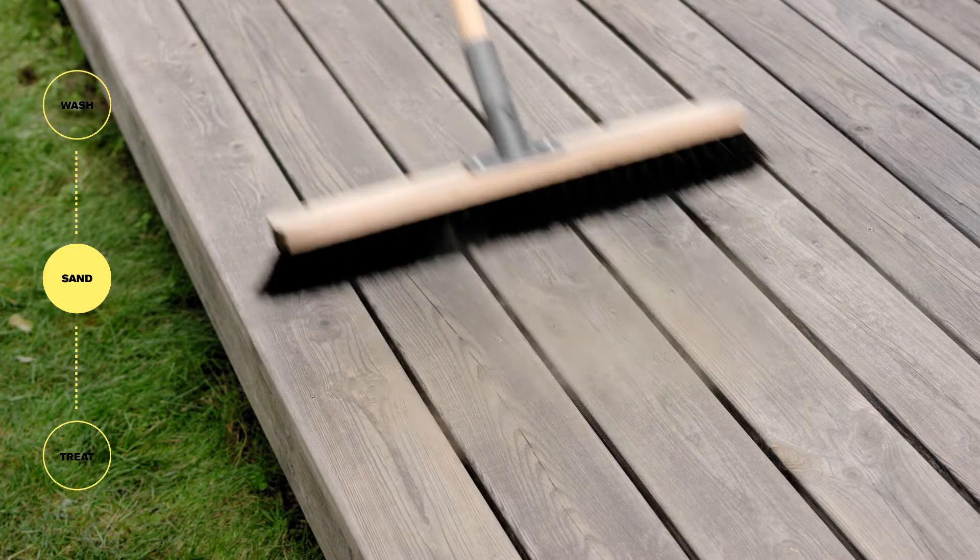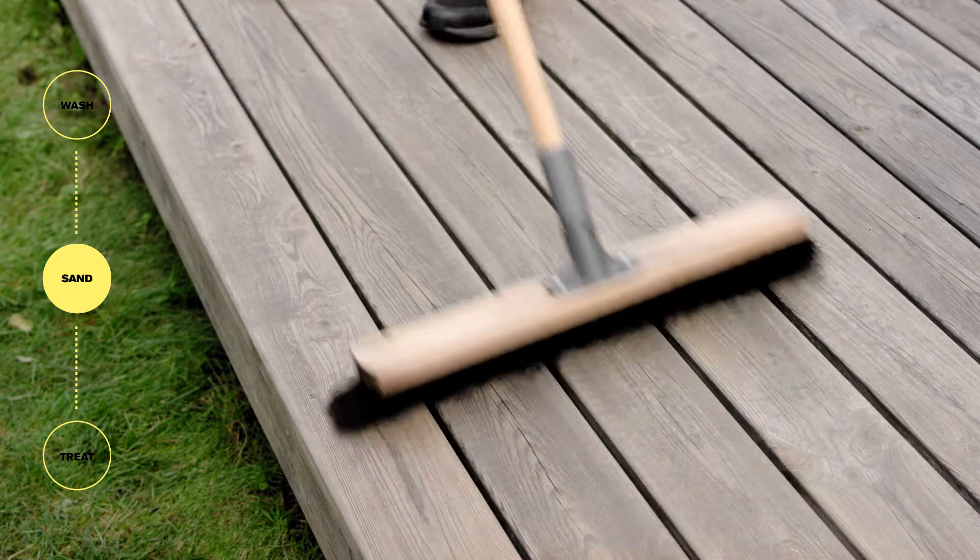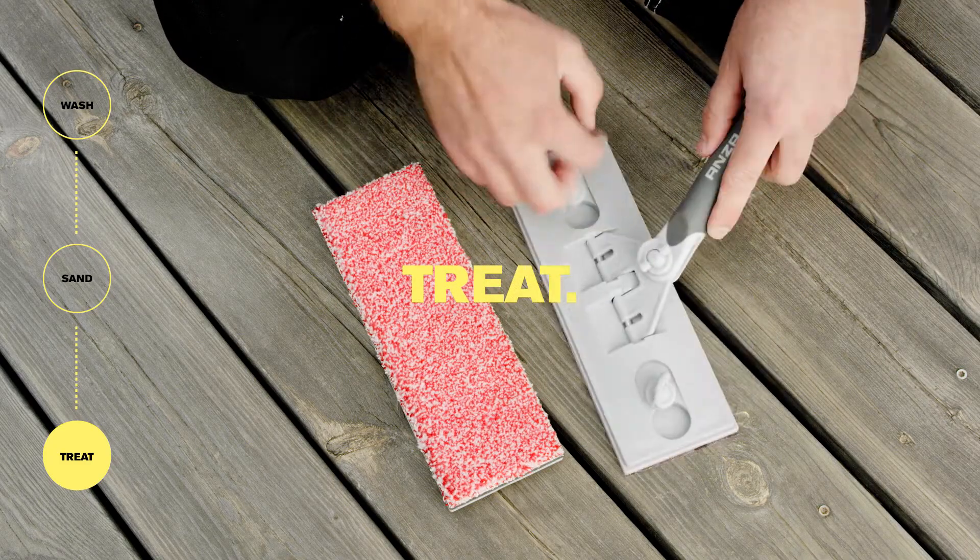Brush away all sanding dust with a brush. Now it's time to add a new protective layer of terrace oil.